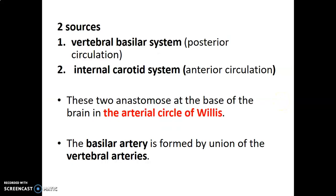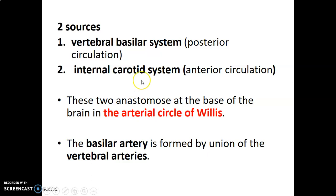We have two sources of blood supply to the central nervous system. We have the vertebral basilar system, which is also called the posterior circulation, and the internal carotid system, that's referred to as the anterior circulation. These two circulations usually anastomose at the base of the brain and form what you call the arterial circle of Willis.